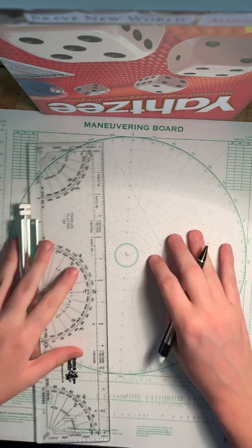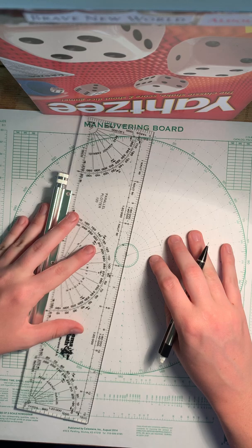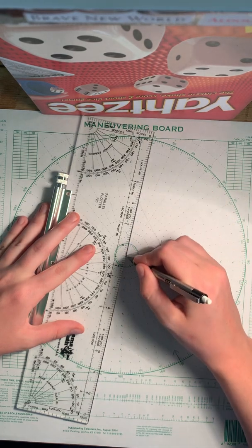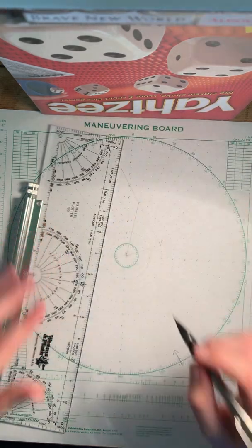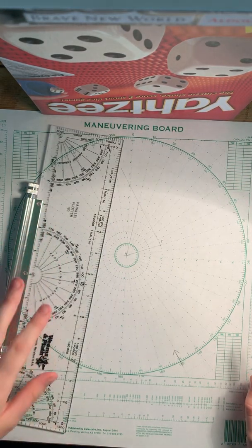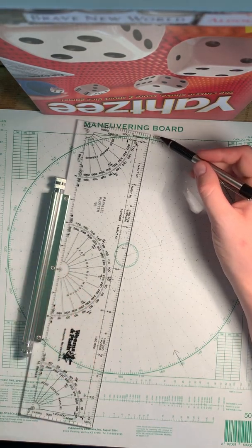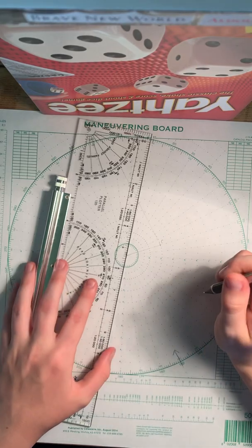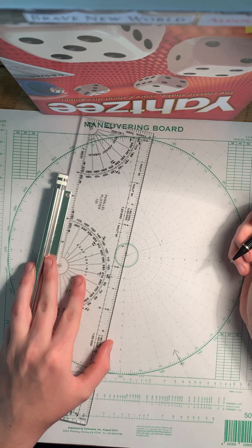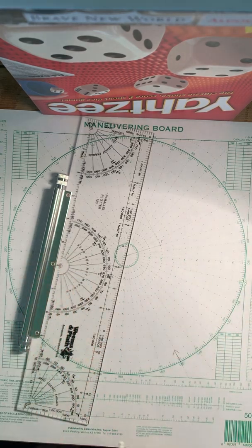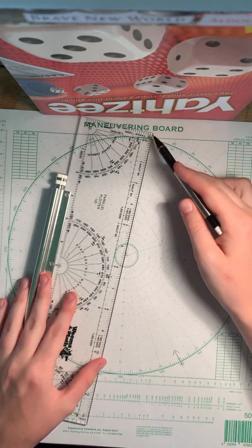And then, where that intersects, you're going to draw a line back to E. And then, you're going to mark the bearing on your outer circle, because you want to get the true bearing. So the true bearing you get is 010.